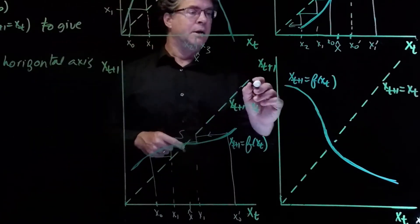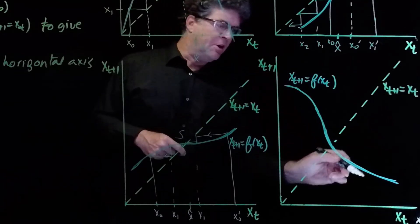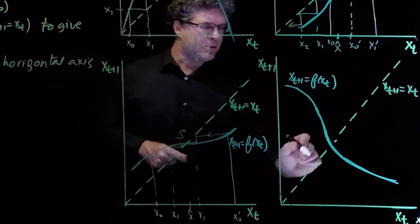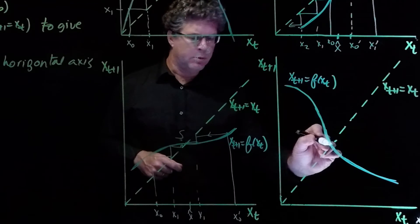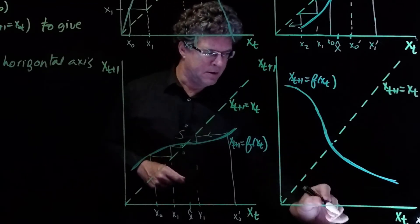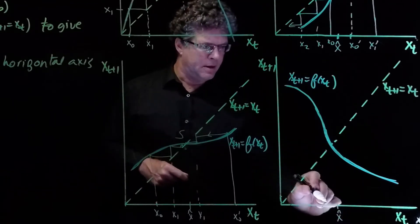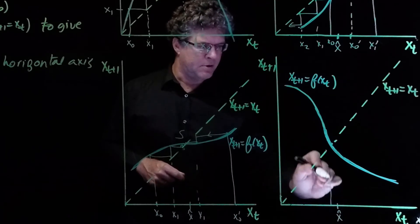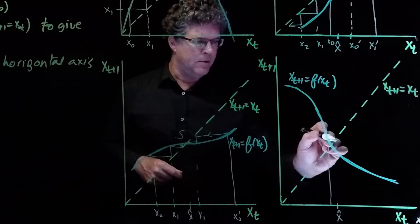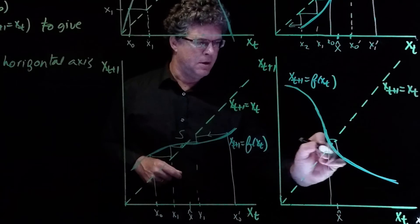This function here is quite a steep function, and it drops off. And so let's try starting on the left-hand side of the equilibrium point, x hat. So we'll start here, and then we'll cobweb out.